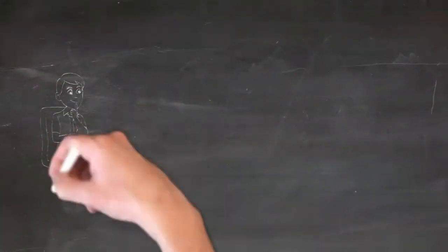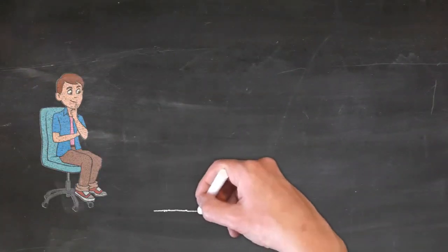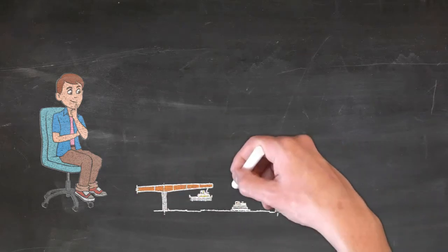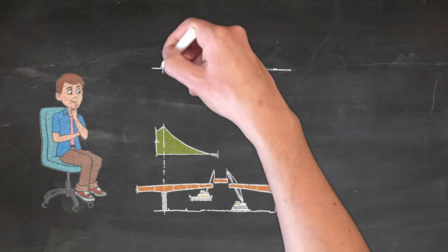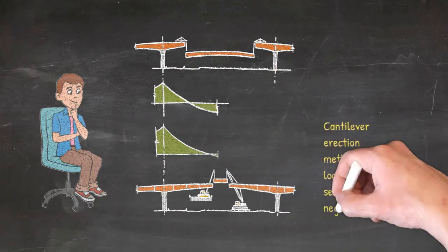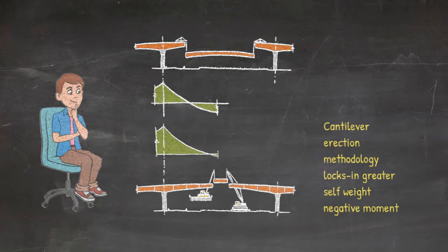Next, check for any locked-in dead load stresses unique to the erection sequence. For example, a girder bridge erected in progressive cantilevering has about 50% higher dead load moment above pierce compared to conventional erection. This would need to be accurately accounted for in your design.